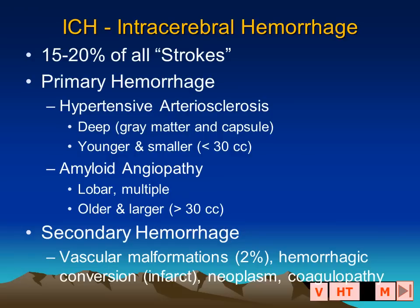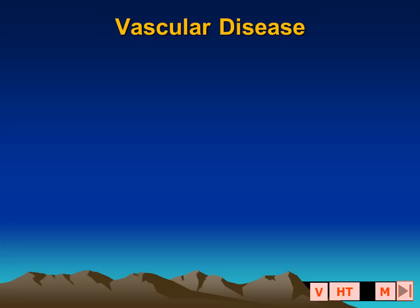Hypertensive arteriolar sclerosis is the most common cause of a primary spontaneous intracerebral hemorrhage, and combined with amyloid angiopathy account for 80 percent of such lesions.